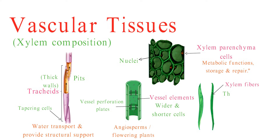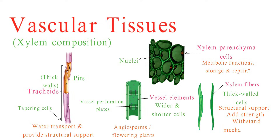Xylem fibers are long, thick-walled cells that provide structural support to the plant. They are typically found alongside tracheids and vessel elements. These fibers add strength to the plant's xylem, helping it withstand mechanical stress. These various xylem components work in synergy to transport water and dissolved minerals efficiently throughout the plant.